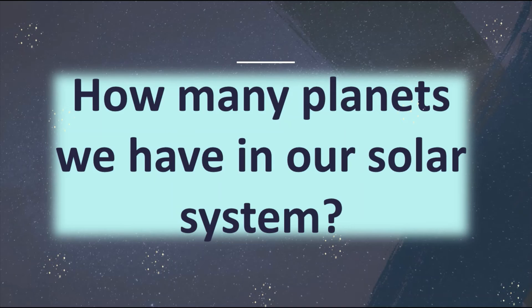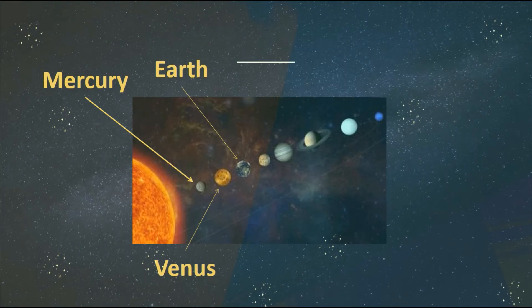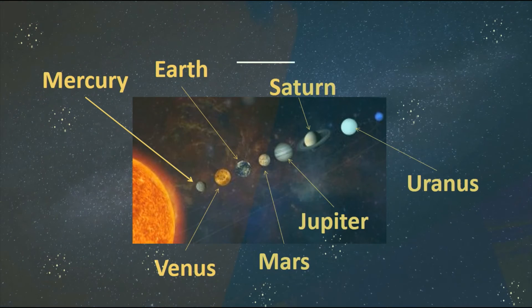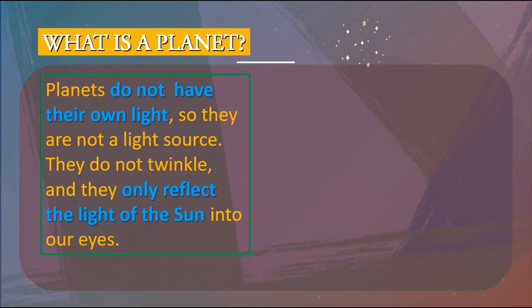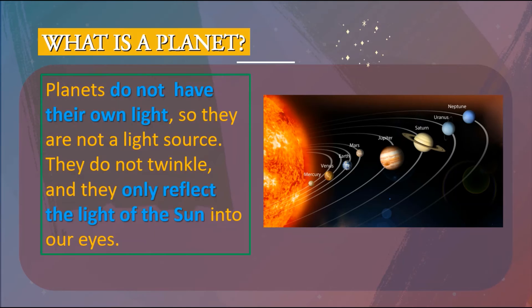Now, how many planets do we have in our solar system? The first is Mercury, Venus, Earth, Mars, Jupiter, Saturn, Uranus, and Neptune. There are eight planets revolving around the sun. Planets do not have their own light, so they are not a light source. They do not twinkle either. But why can we see the planets sometimes in the night sky? It is because they reflect the light from the sun into our eyes — that's why we can see them.